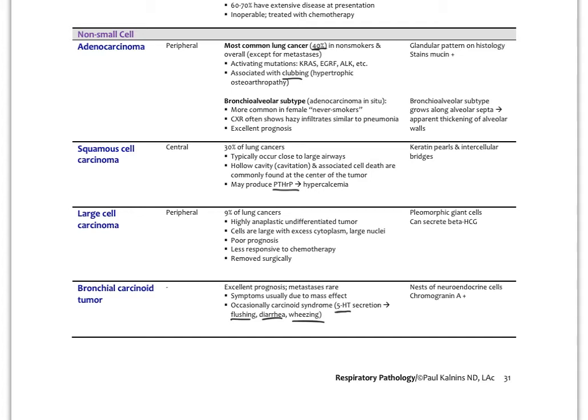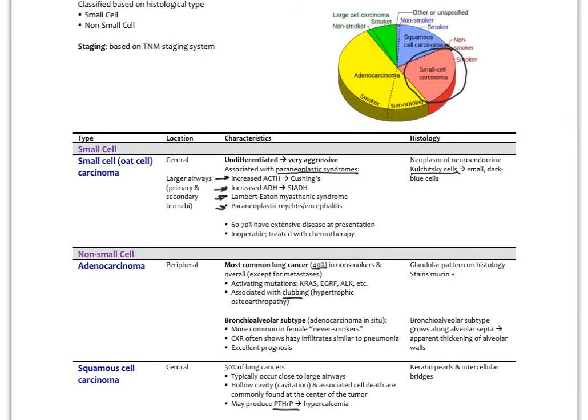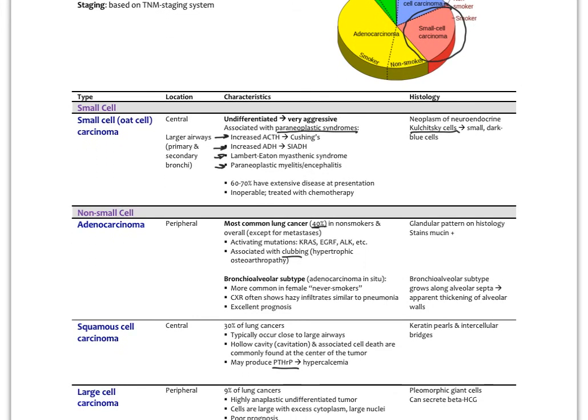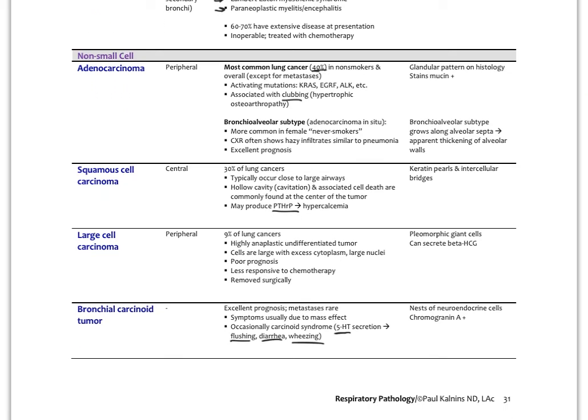When a patient says they have lung cancer, it's important to know which type, as this significantly affects prognosis and treatment. For example, small cell oat cell carcinoma carries a very different prognosis than the bronchioloalveolar subtype of adenocarcinoma. The type of lung cancer and its stage can help guide therapeutic decisions.